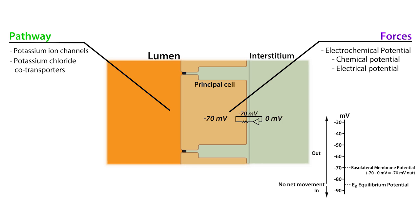This is what happens across the apical membrane. The electrical potential of the luminal fluid within the collecting duct is minus 30 millivolts, not zero. This means the potential difference across the apical membrane is minus 40 millivolts, which is significantly less negative than the minus 70 millivolts across the basolateral membrane. There is therefore less of an opposing force for potassium secretion across the apical membrane. Keep in mind that anything that makes the luminal potential more negative will decrease the potential difference across the apical membrane and favor potassium secretion.